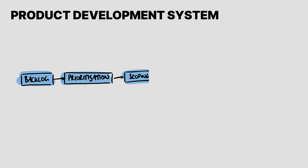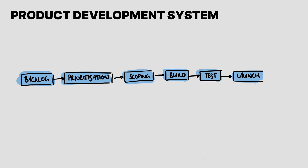For our example, where we missed our revenue target because we didn't launch our product feature in time, it might look something like this: backlog, then prioritization, then scoping and requirements, then build, then test, then launch. This gives us a model we can use to see how things influence one another, and it also highlights that there are a number of potential causes of our problem.